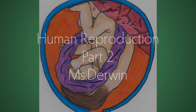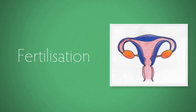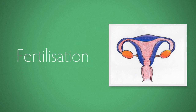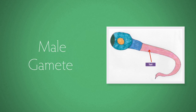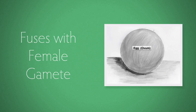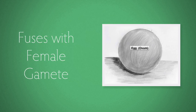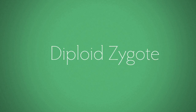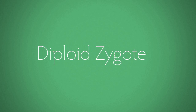Part 2 of Human Reproduction. The last video left off at fertilisation. Fertilisation is when the male gamete, the sperm, fuses with the female gamete, the egg, to form a diploid zygote.